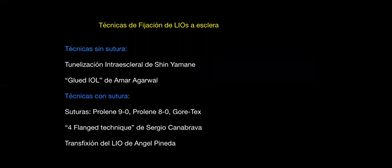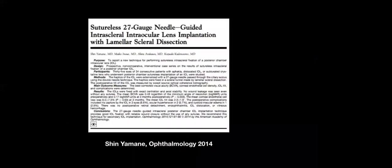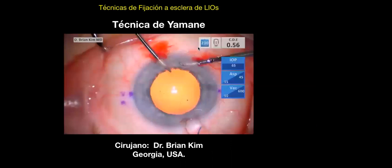El doctor Yamane, ya en el año 2014, publicó en la revista Ophthalmology su técnica para la fijación de lentes plegables a esclera, diseñada básicamente para fijar lentes plegables de tres piezas. Esta cirugía, realizada por el doctor Brian Kim de Estados Unidos, muestra cómo él marca dos milímetros detrás del limbo de cada lado, lado nasal y lado temporal, con una separación de 180 grados, que es donde va a introducir las agujas para entrar en el sulco ciliar.